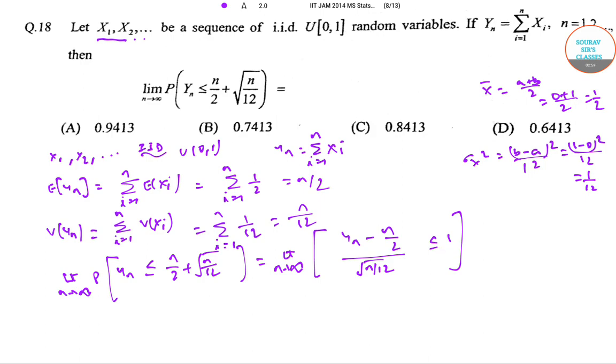Now this resembles a normal probability distribution where this thing is the mean and this is variance. So this becomes P(Z ≤ 1). Thus this becomes Φ(1), and the value of Φ(1) is 0.8413. Therefore, the correct answer is option C.